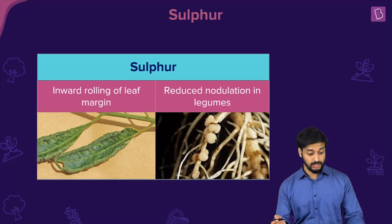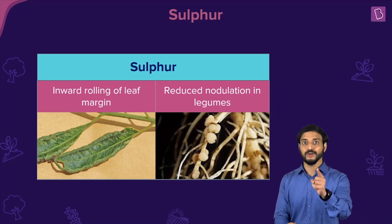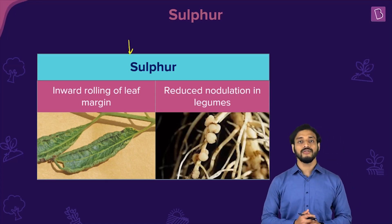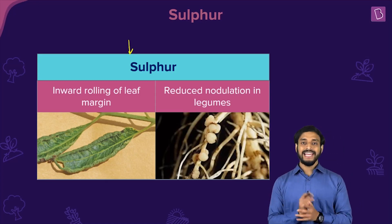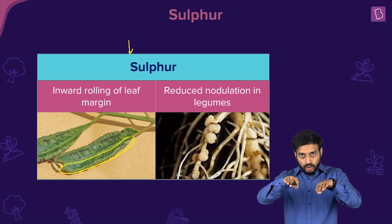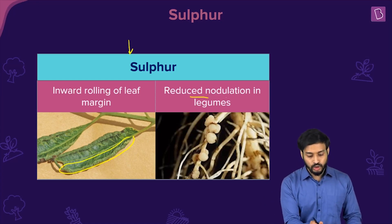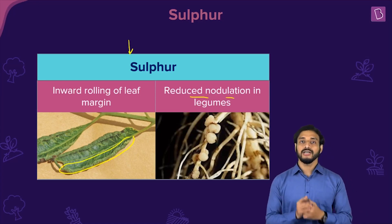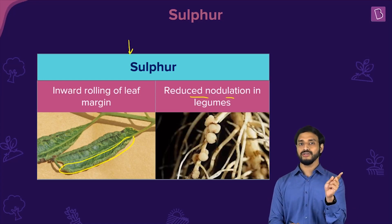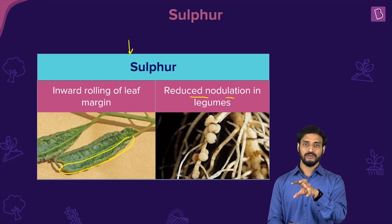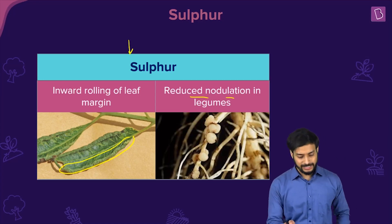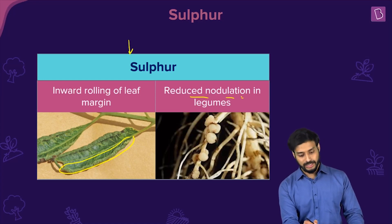Sulfur deficiency causes inward rolling of the leaf margins — you can see the margins of the leaves rolling inwards. It also causes reduced nodulation in leguminous plants. Nodule formation is very important for nitrogen fixation — the conversion of atmospheric nitrogen into forms usable by plants.